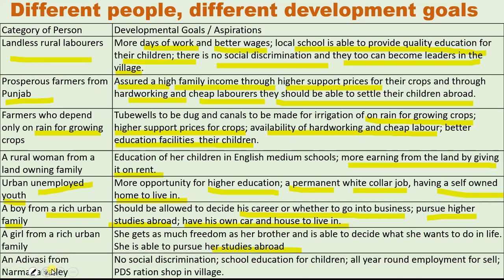An Adivasi from the Narmada Valley region — what can be the expectations of such people? No social discrimination, as they belong to Adivasi communities; school education for children; all year-round employment; and a PDS ration shop in the village, since in Adivasi regions such facilities are often lacking.